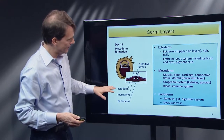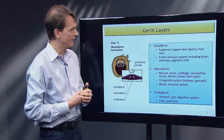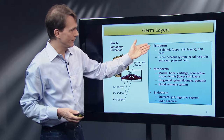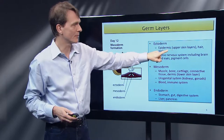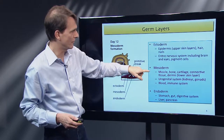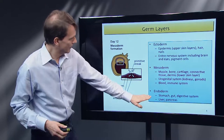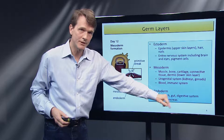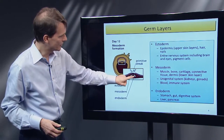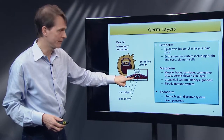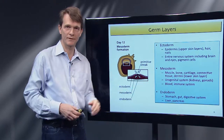Way later in organismal development, the derivatives of these germ layers are organs we're all familiar with. The ectoderm forms the epidermis, upper skin layers, hair, nails, and the entire nervous system. The endoderm makes the stomach, gut, digestive system, liver, pancreas, etc. The mesoderm — the tissue layer generated during embryogenesis — makes muscle, bone, the urogenital system, kidneys and gonads, blood, the immune system, etc.